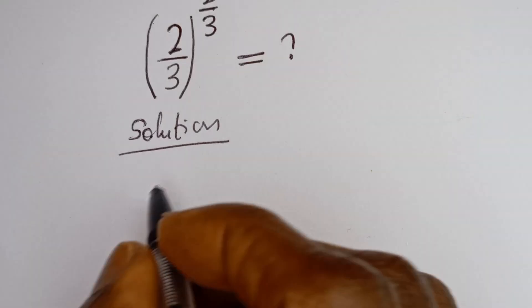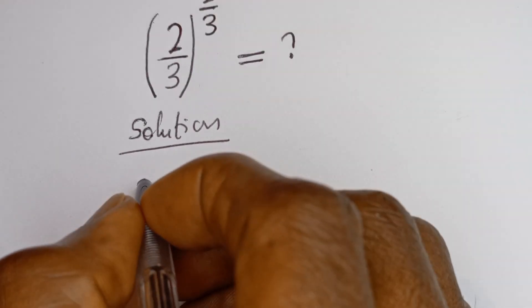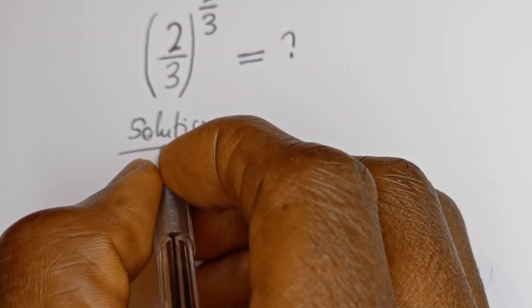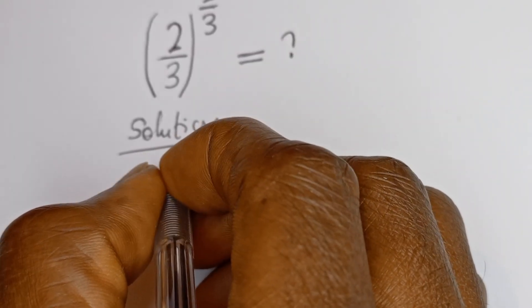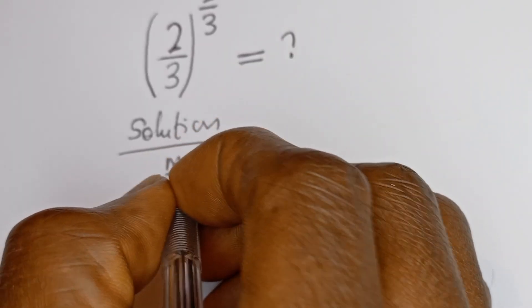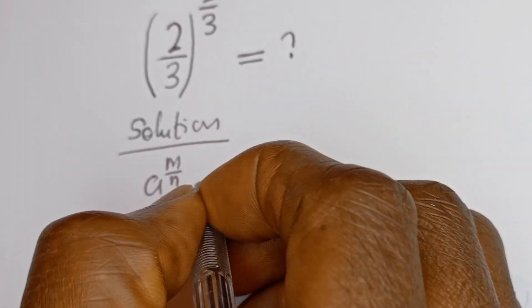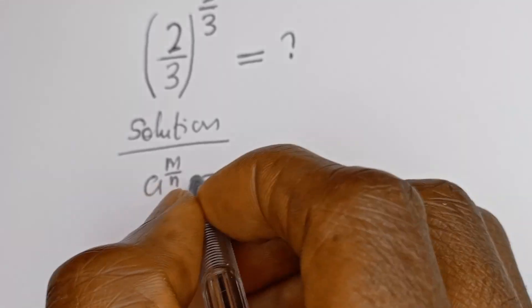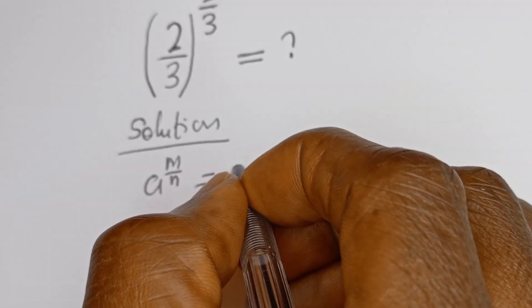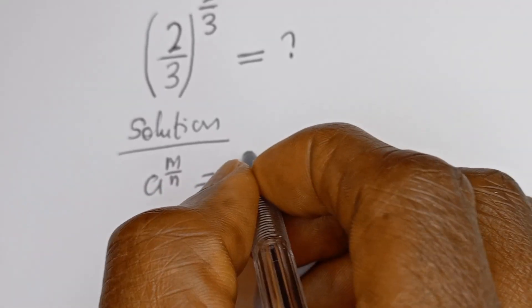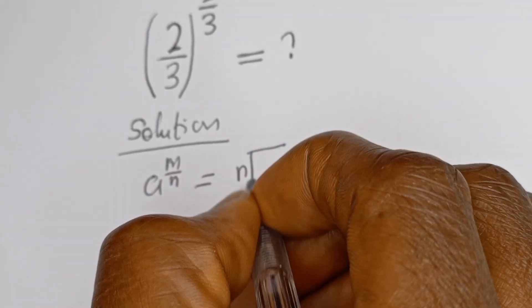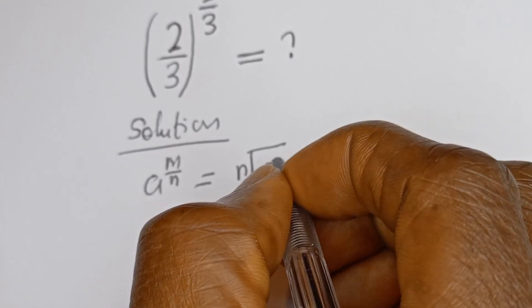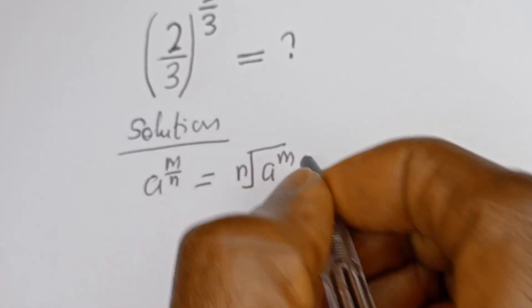Take note of this: if you have a to the power of m over n, this is equal to the nth root of a to the power of m.